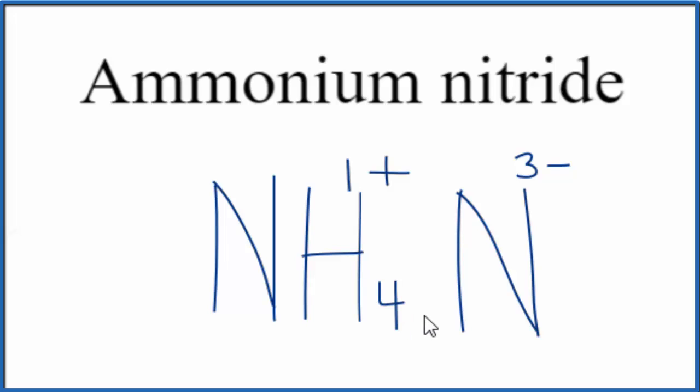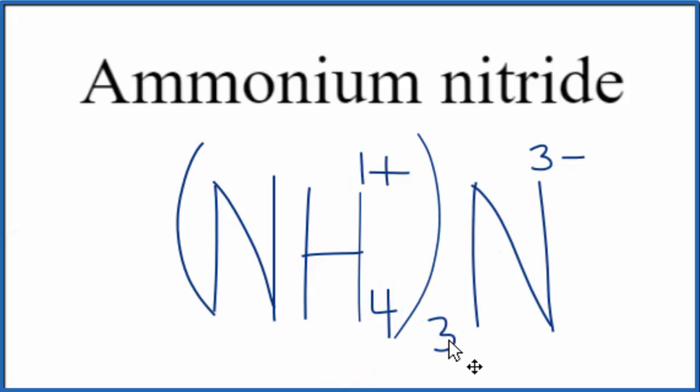So we could put a 3 here. Then we need to put parentheses though around the ammonium ion. So this way we have 3 times 1 plus, that's 3 plus and the 3 minus. So this gives us a net charge of 0 when we're writing this formula here for ammonium nitride.